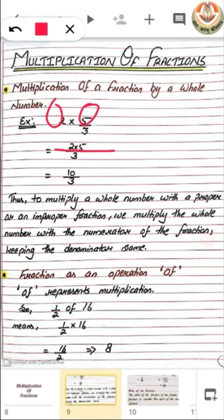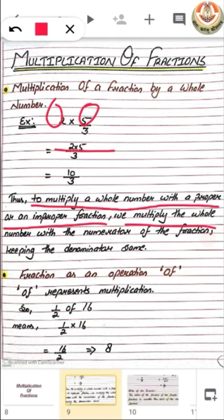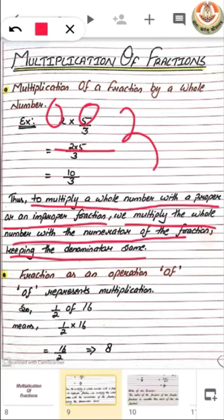Thus, to multiply a whole number with a proper or an improper fraction — whether the fraction is proper or improper, the way of multiplying with a whole number is the same — we multiply the whole number with the numerator and keep the denominator the same.